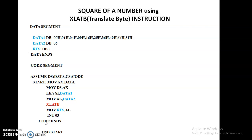Coming to our program, it consists of two parts: the first part is the data segment part and the second part is called the code segment part. In the data segment, we declare all the variables which we use in our program. And in the code segment part, we write all the instructions which we use in this program.